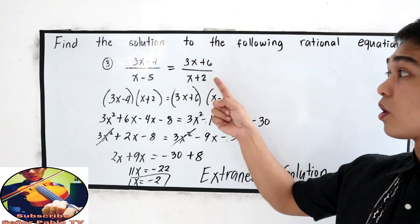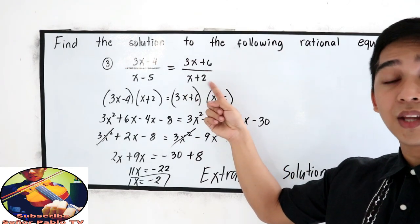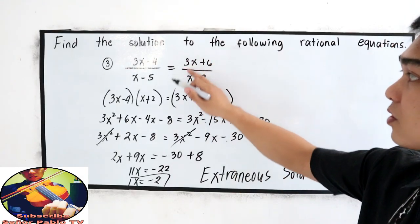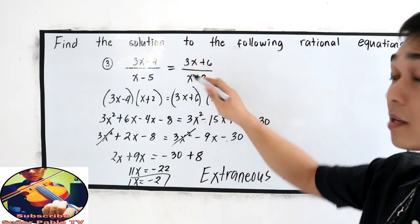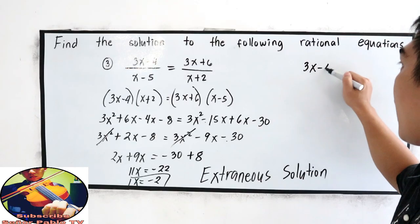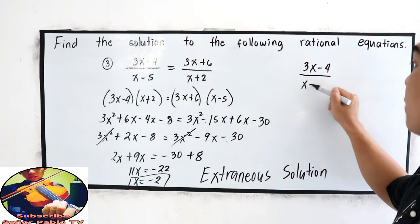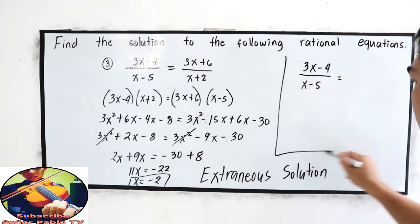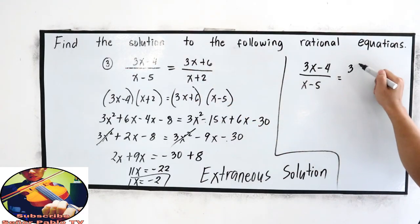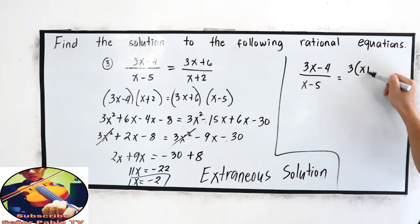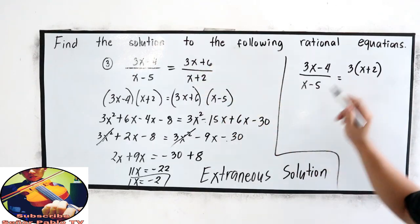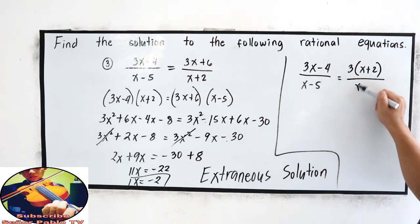So there is another way to solve this rational equation. Take a look at our equation on the right side, that this can be cancelled out. So copy the left side of the equation, 3x minus 4 all over x minus 5 is equal to, let us factor the numerator, that is 3 times x plus 2, 3 times x is 3x, 3 times 2 is positive 6, over x plus 2.